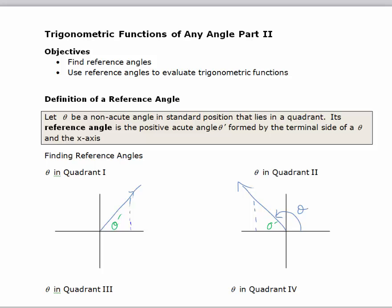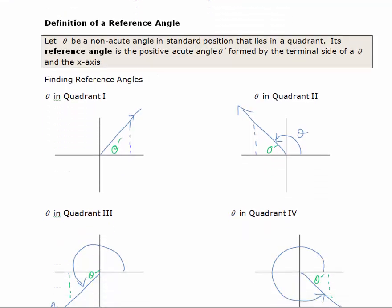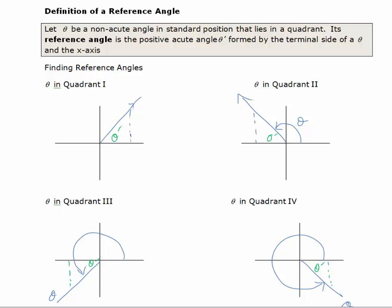We're going to continue our discussion of trigonometric functions of any angles, and we're going to talk about using reference angles to evaluate trigonometric functions for angles greater than 90 degrees. We'll start by defining a reference angle. Let theta be a non-acute angle in standard position that lies in a quadrant. Its reference angle is the positive acute angle formed by the terminal side of theta and the x-axis.